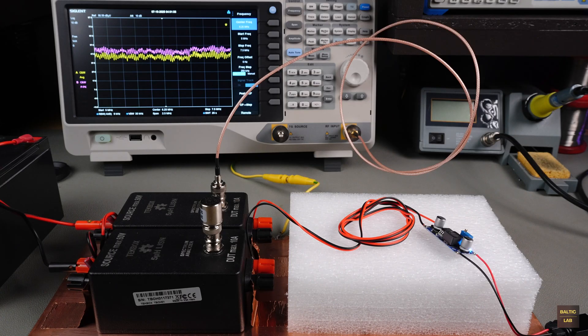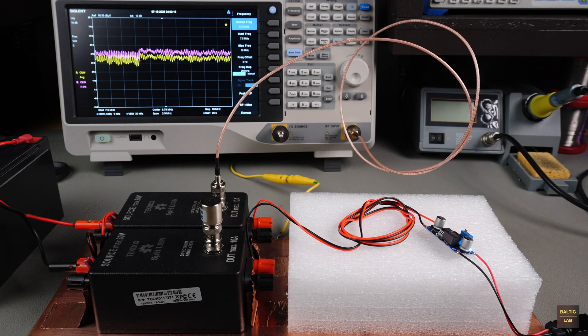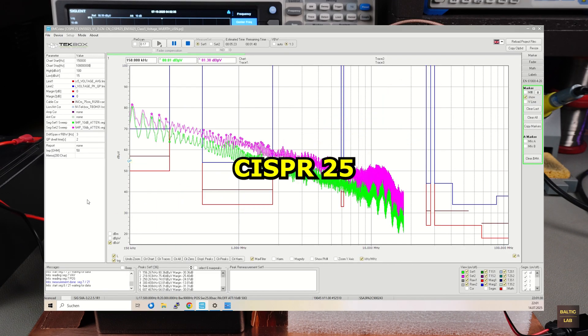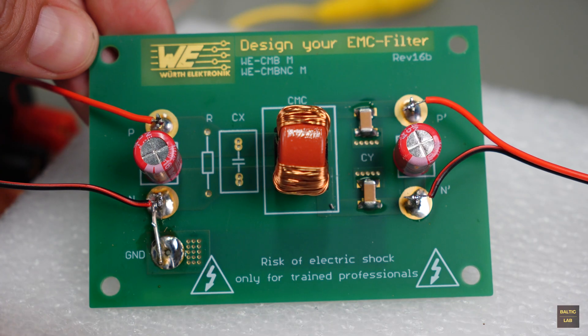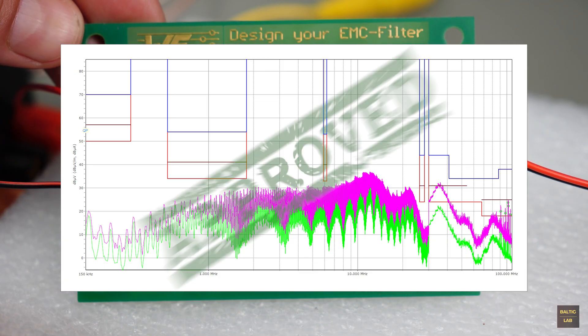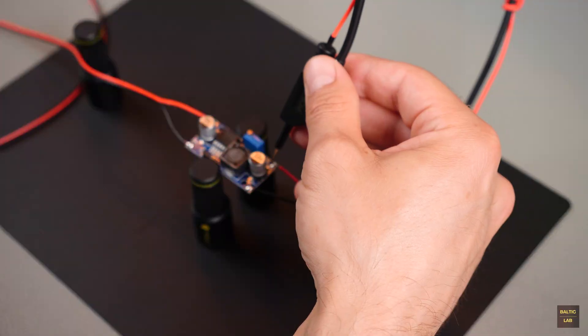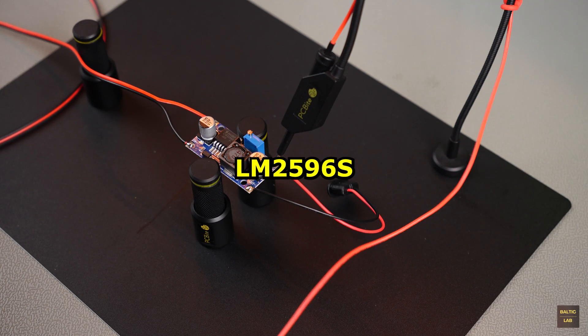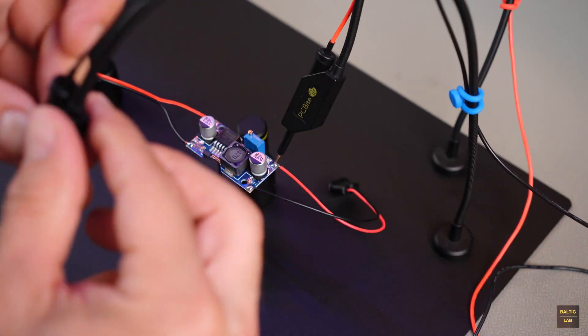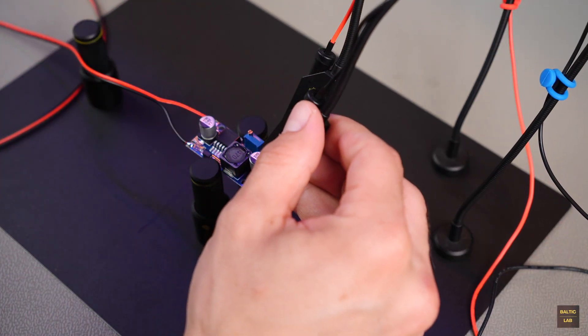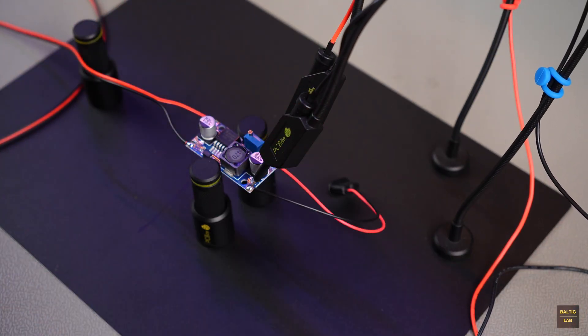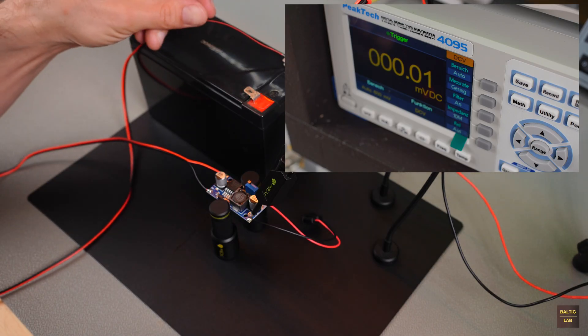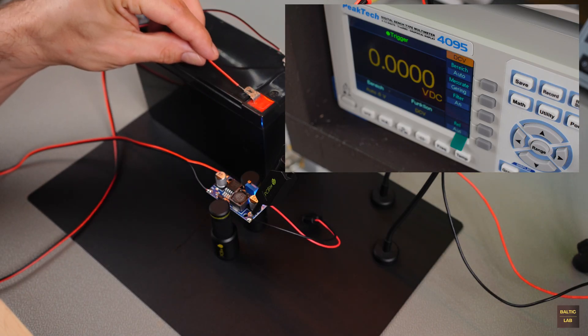In this video I'll show you how to measure the conducted emissions of the converter according to the CISPR25 standard and how to bring these emissions below the required limits using a filter circuit. We're looking at a low-cost buck converter based on the LM2596S. It's typically used to step down the 12V vehicle power supply to 5V, for example to power small devices or electronic modules in the vehicle.